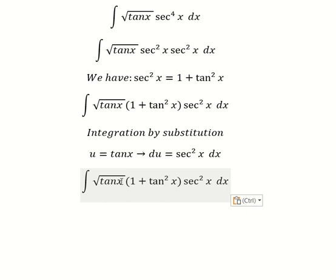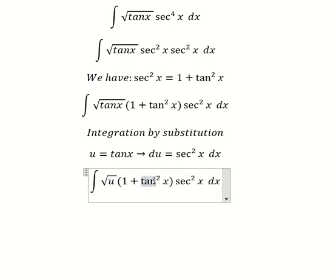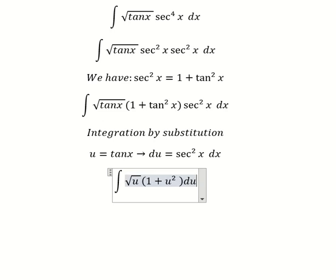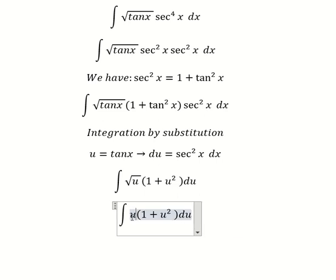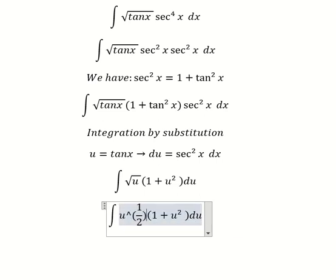Now we change the variables to u: this becomes u, this becomes u squared, and this becomes du. The square root of u can be written as u to the power of 1 over 2.